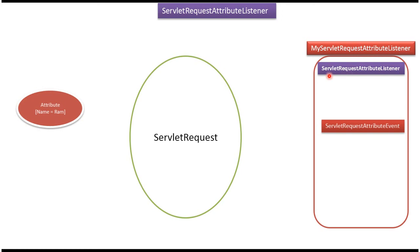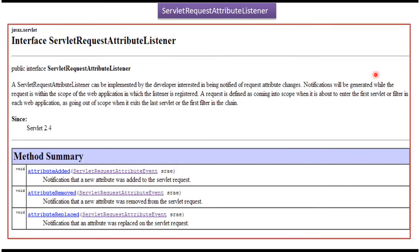Here you can see the ServletRequestAttributeListener — this is the interface. It has three methods: attribute added, attribute removed, and attribute replaced. So we can write our own listener class which implements the ServletRequestAttributeListener and we can override these methods.